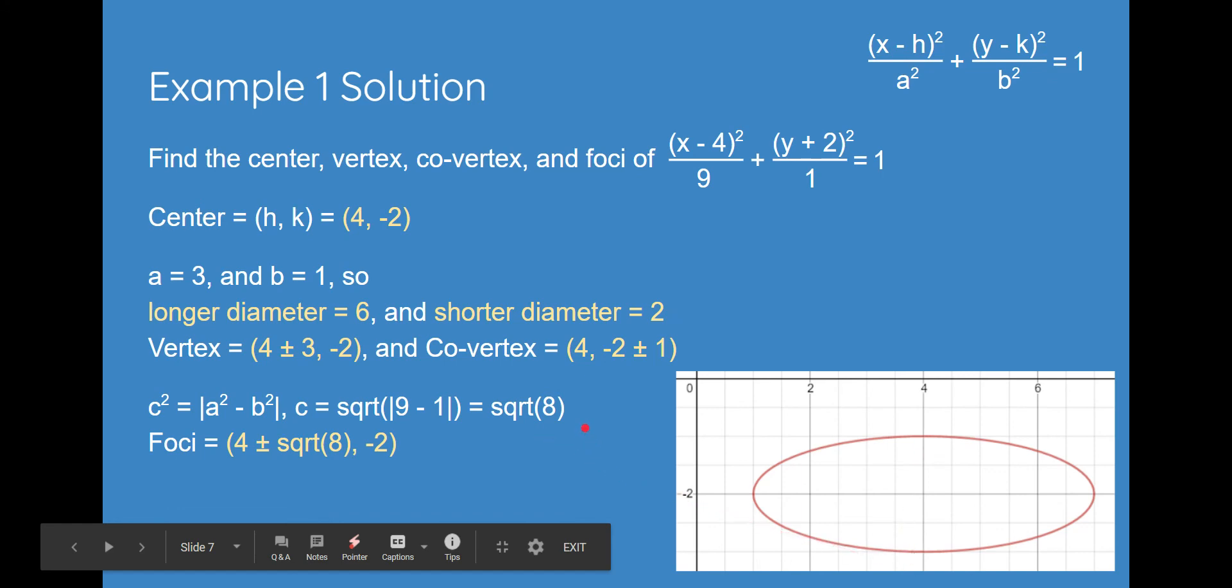And, in order to find foci, remember, we use this equation right here. We plug in a and b, get this, and finally get square root of 8. And remember, foci is always on the longer axis. So, it would be about here and here.